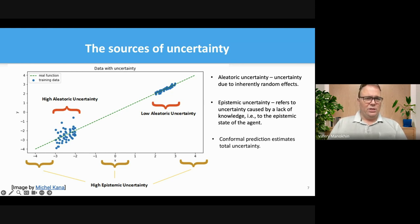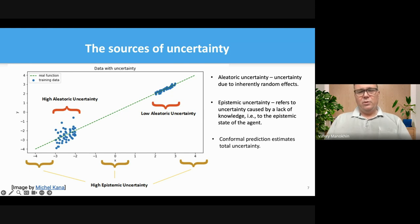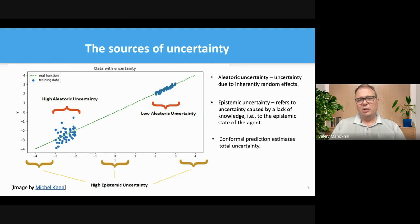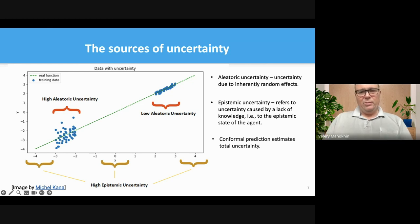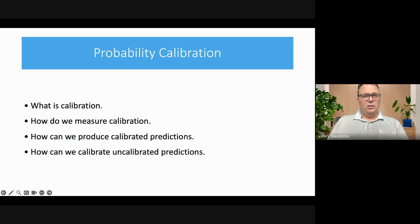The second type is called epistemic uncertainty — uncertainty caused by lack of knowledge. If we can improve our model to better understand a phenomenon, we can reduce epistemic uncertainty, but aleatoric uncertainty will still remain. For example, there may be regions where we haven't observed any data, so our model cannot comfortably reason about them because it hasn't seen that data.